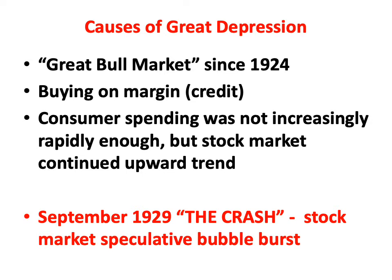Now let's look briefly at some of the causes of the Great Depression. Since 1924, there had been a great bull market — a bull stock market means the stock market is increasing, while a bear market means it's generally on a decreasing trend. Everybody saw this as a surefire way to earn money. Lots of people didn't have the cash to buy, so we saw how people received credit to buy consumer products, from cars to refrigerators.